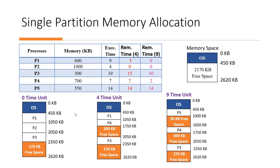After 4 units of time, since P2 has finished execution, its 1000 KB space is freed. We can accommodate P4 there. P4 is allocated from 1050 onward — how much will it be? 1050 to 1750 KB. The remaining 300 KB from 1750 to 2050 is free space. Process 3 is assigned memory from 2050 to 2350, and the remaining free space is 270 KB.